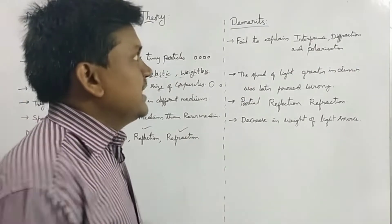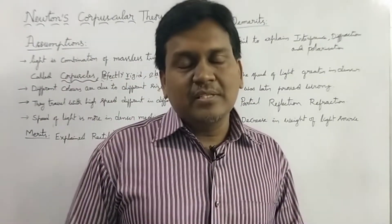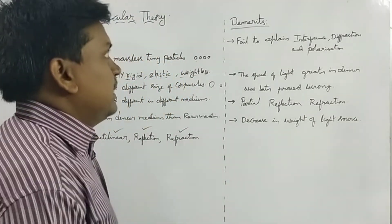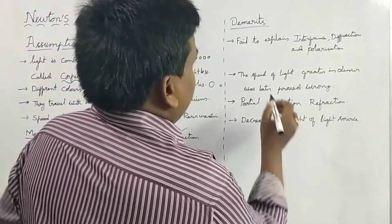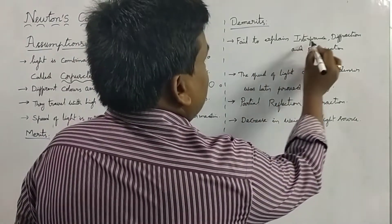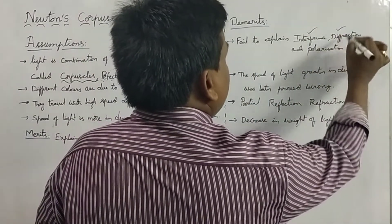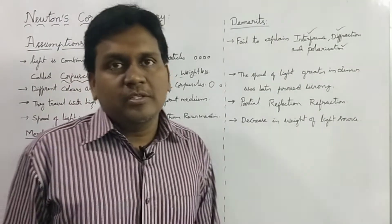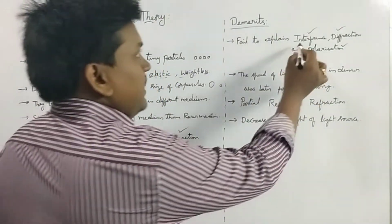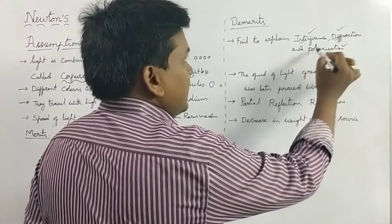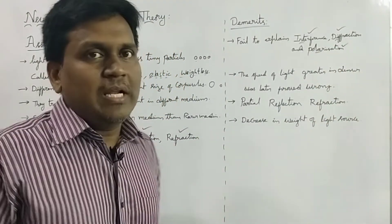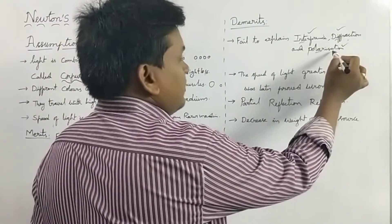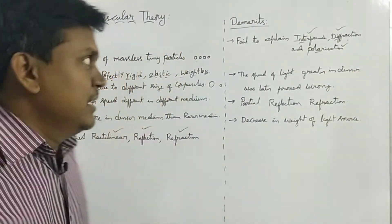Coming to the demerits: Newton's corpuscular theory failed to explain interference, diffraction, and polarization. These are also properties of light, and he failed to explain these three. We have already discussed interference, diffraction, and polarization in previous classes.